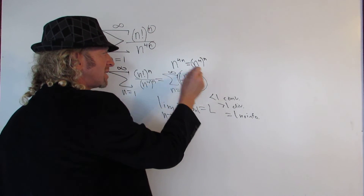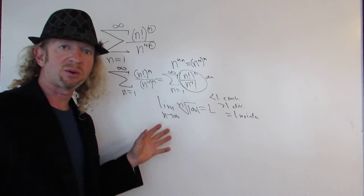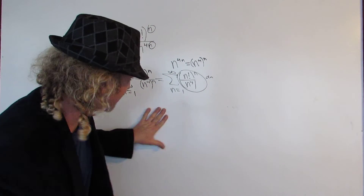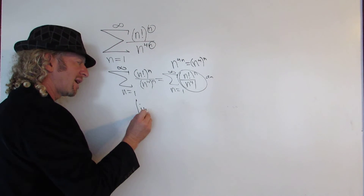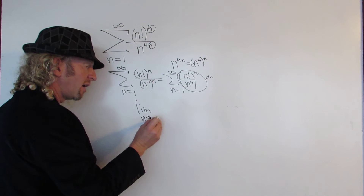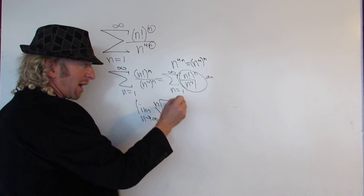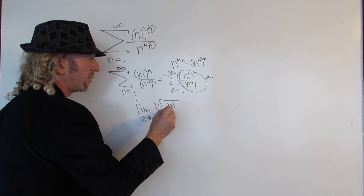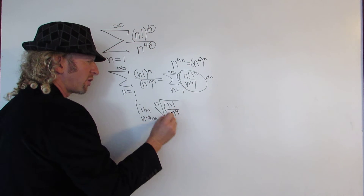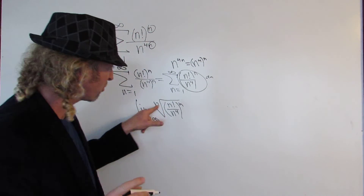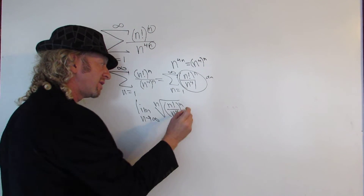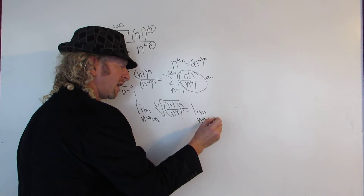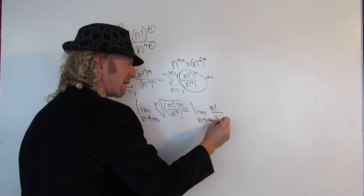In this problem, this is your a sub n. The absolute value is irrelevant because everything here is positive — n is an integer. So let's take the limit: we have the limit as n approaches infinity of the nth root of n factorial over n to the 4th, all to the nth power. The nth root and the nth power cancel, so this is equal to the limit as n approaches infinity of n factorial over n to the 4th.